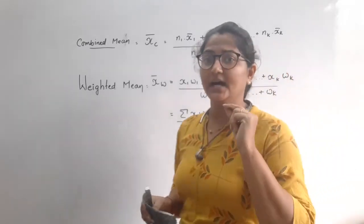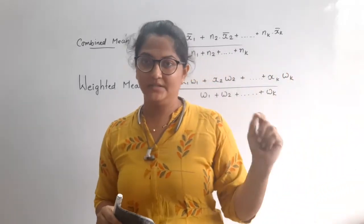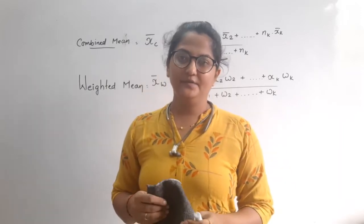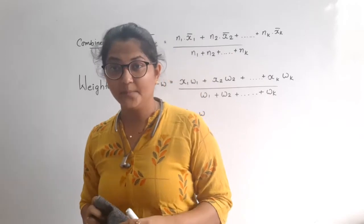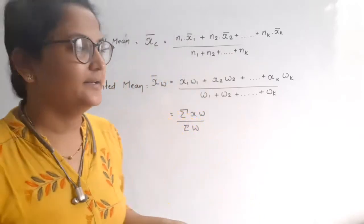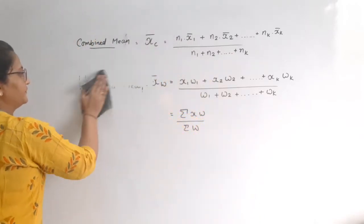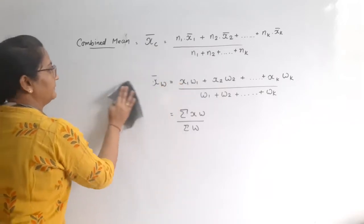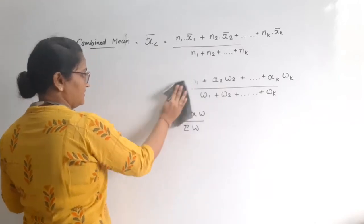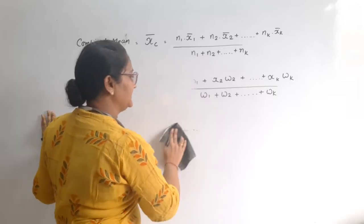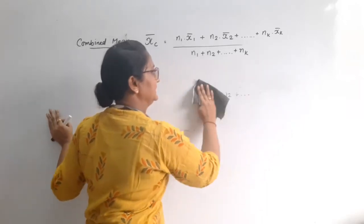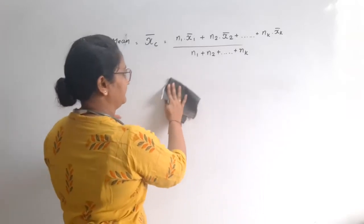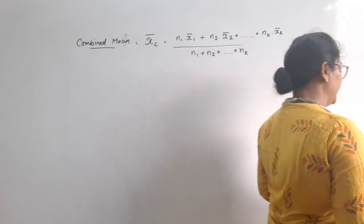Find mean wages of all the workers. Here, there are two groups of workers. So obviously, which mean will we find? Combined mean. Because there is more than one x bar here. When there is more than one x bar, then you can understand to find combined mean. Let's go. First, let's bifurcate.